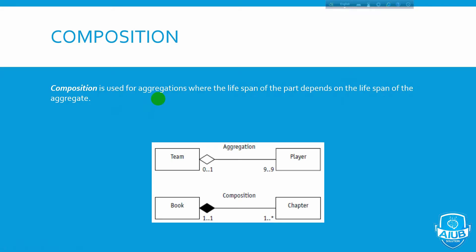Let's talk about composition with a team example. A team has players, a manager, therapist, and coach. If you put the team together with its leaders, and the team no longer exists, all its parts cease to exist too — we don't have a team together. So this is composition, and that makes composition and aggregation clear.